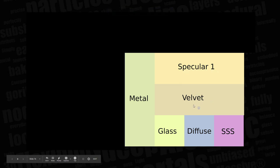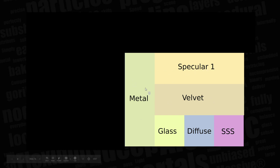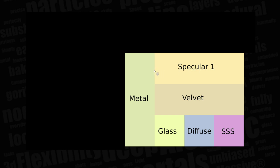Going back to the shader overview: if you say something is pure metal you can still get specular, velvet, or diffuse — metal is different from dielectric, it's binary, one or zero. Mixing them doesn't really exist in the physical world, but you can do it. If an object is pure glass it's not going to be diffuse or SSS, and if it's pure SSS it's not going to be diffuse. So there's a priority system because it's physically based.